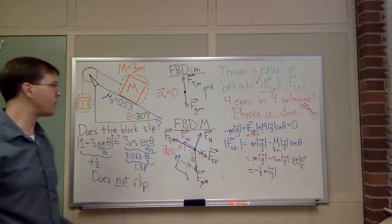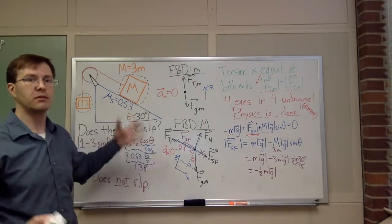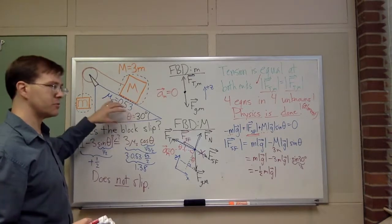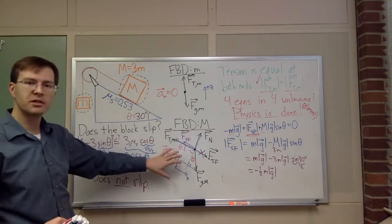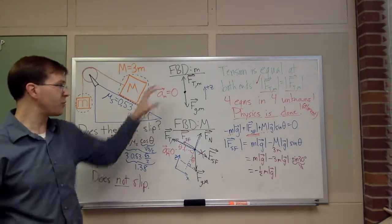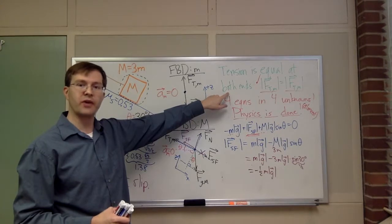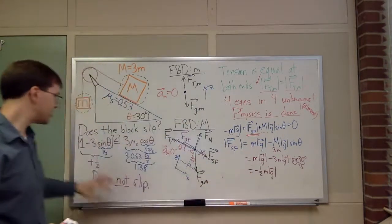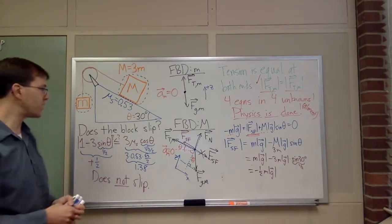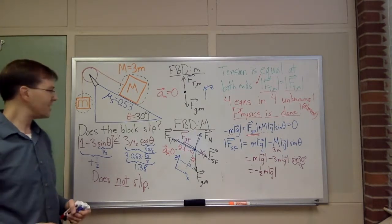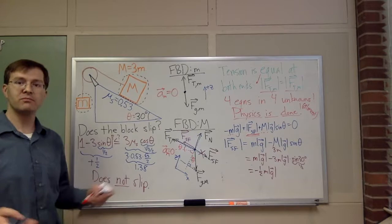To take stock of what we just did: the strategy for a 'does it slip' problem — assume it doesn't slip, so accelerations are zero. Draw free body diagrams for all pieces of the system. Write Newton's second law in components for each free body diagram. The extra piece of information is that tension is equal at both ends of a massless rope, even going around a massless frictionless pulley. Then it's algebra to do the comparison, with a little extra interpretation for the minus sign. That's the answer to 'does it slip,' and I hope this gives you a sense of how to solve not just friction problems, but interacting object problems in general.